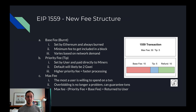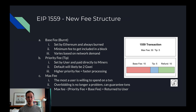The base fee is basically the minimum you need to spend to get included in a block, and this varies based on network demand. The next fee type is the priority fee, or tip, set by the user. This tip is paid directly to miners and it's to incentivize them to include a transaction in the next block.